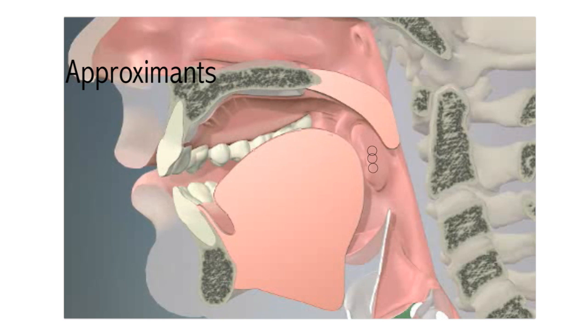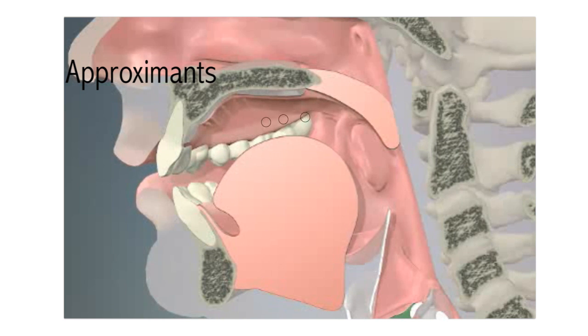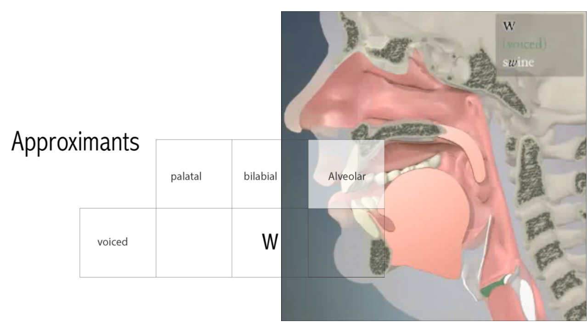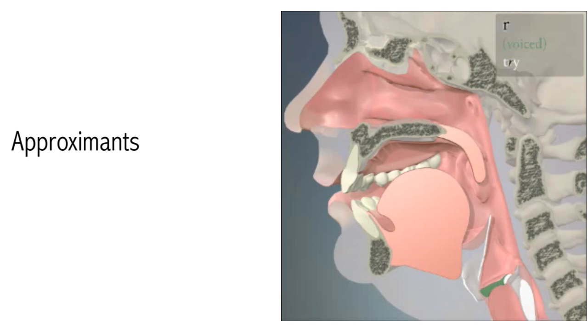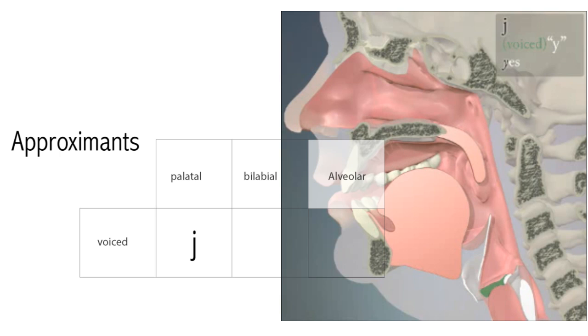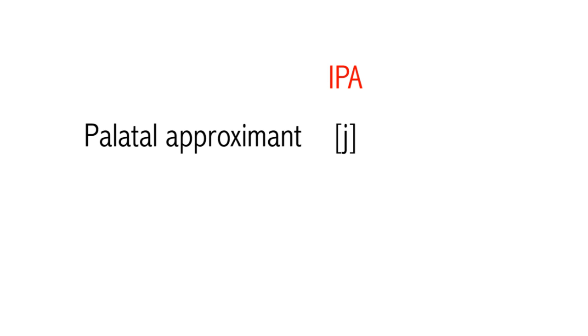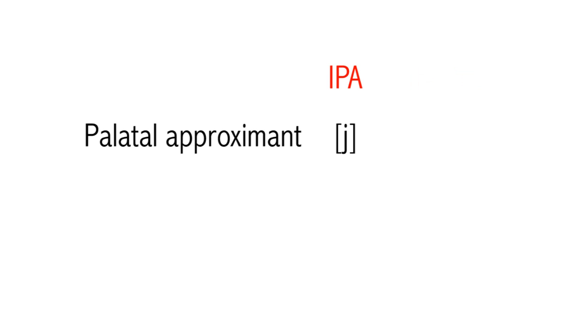Approximants. Approximants are made by bringing two articulators fairly close together but not so close as to make the noisy hissing sound characteristic of fricatives. There are three approximants in English. W, as in 'will,' is a voiced bilabial approximant. R, as in 'right,' is a voiced alveolar approximant. Y, as in the first sound of 'yellow,' is a voiced palatal approximant.